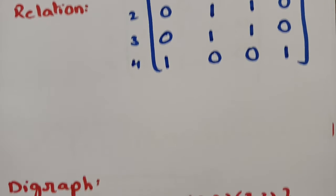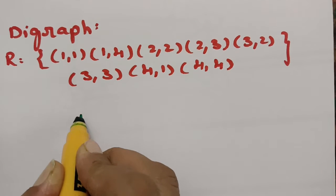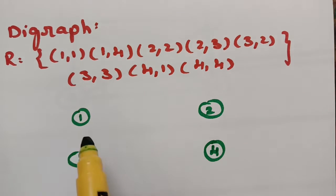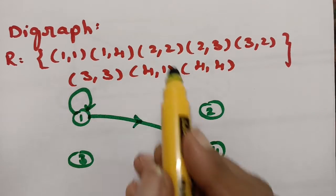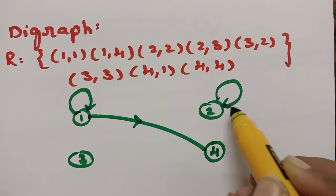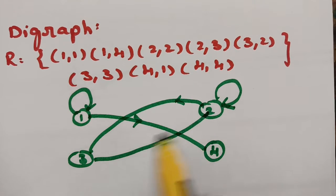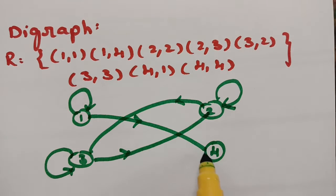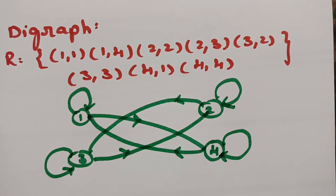Now, how to represent this relation as a digraph? The vertices are 1, 2, 3, and 4. There is a relation from 1 to 1 — it is a single element, so keep a self-loop. From 1 to 4 draw an edge. From 2 to 2 — single element, so keep a self-loop. From 2 to 3, draw an edge. From 3 to 2, draw an edge. From 3 to 3 — single element, so give a self-loop. From 4 to 1, draw an edge. From 4 to 4, give a self-loop. This is how we represent a digraph for this relation.